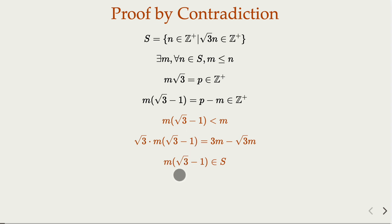So we have found an element in S that is even smaller than the least element m — which is a contradiction. That completes the proof using the well-ordering principle.